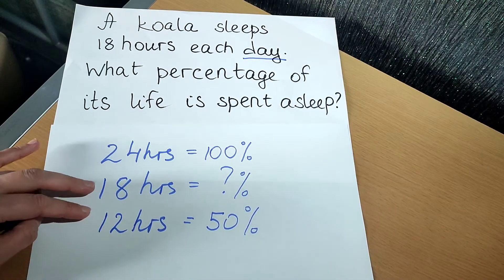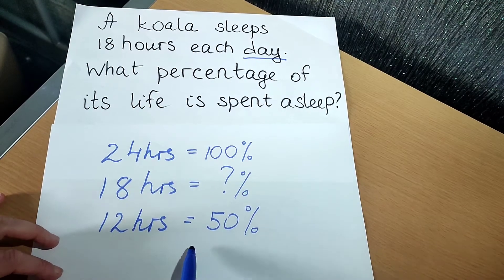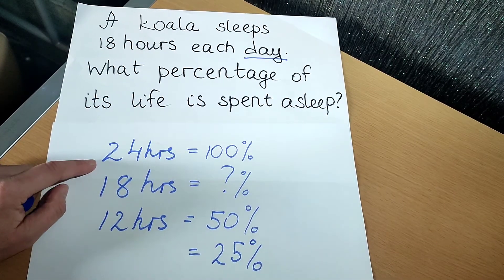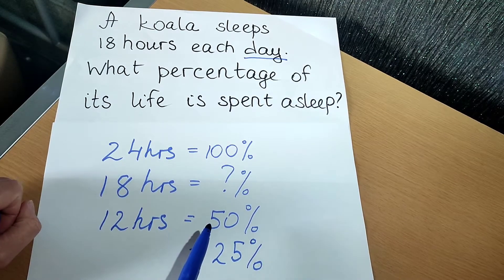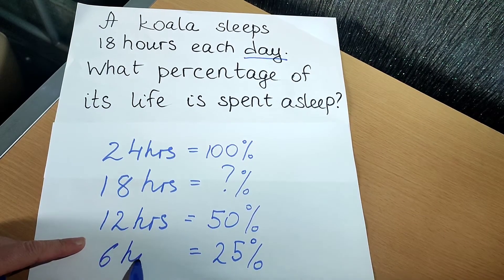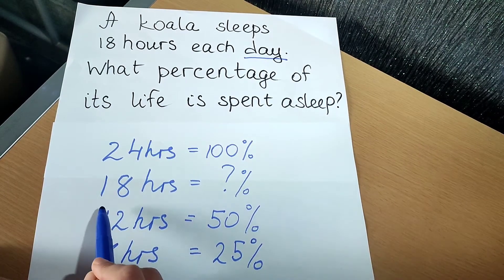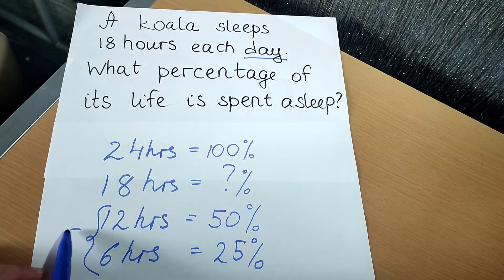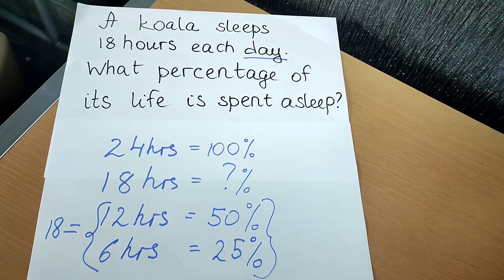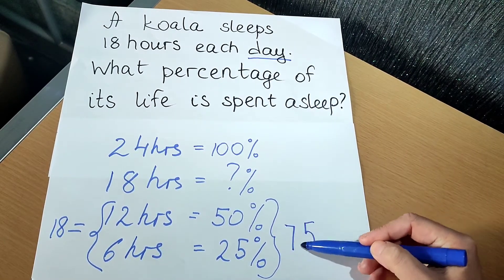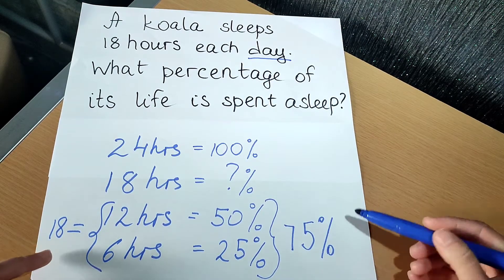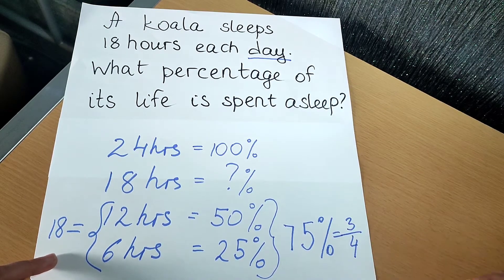Now look at the connection. What about 25%? Can we find 25% of 24? 25% is half of a half — half of 50% — so half of 12 hours is 6 hours. So 12 hours and 6 hours make 18 hours. And what percentage is that? 50% and 25% added together is 75%. So the koala sleeps 75% of the day — or three quarters of each day.